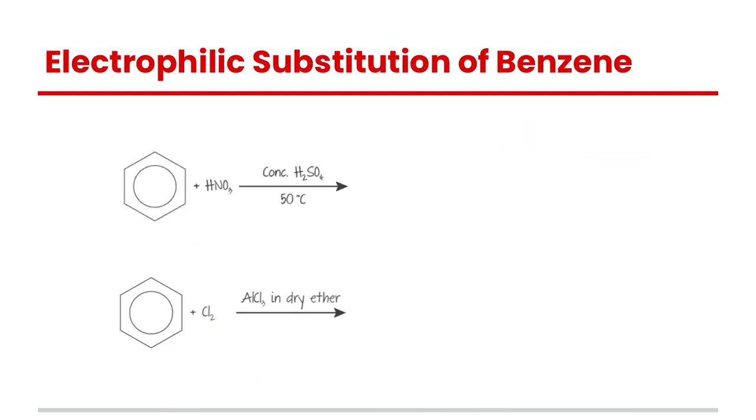The last type of substitution reaction we're going to look at here is the substitution of benzene by an electrophilic mechanism. We'll come back to the mechanisms in a separate video, but essentially benzene the ring will react with nitric acid in the presence of some concentrated sulfuric acid and a little bit of heat. We don't need to know it's specifically 50 degrees celsius but just that we have a bit of heat. What's happening here is one of the hydrogens on this benzene ring, because there's a hydrogen on each carbon, one of them is going to get substituted with an NO2 group from the HNO3.